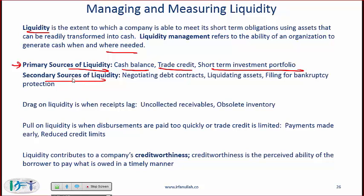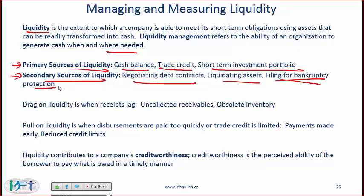Secondary sources of liquidity — which ideally a company would not want to rely on — include negotiating debt contracts, where you owe money and negotiate to pay it back later. Liquidating assets gives money in the short run but hurts the company long-term. Filing for bankruptcy protection provides relief from creditors in the short run, but long-term people will not want to do business with you.